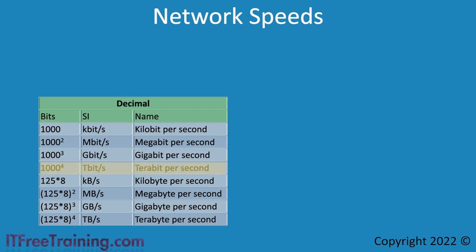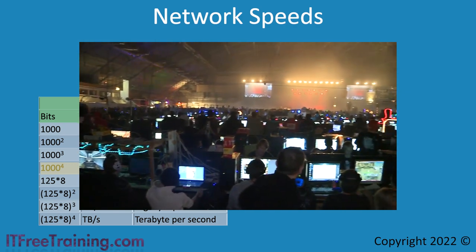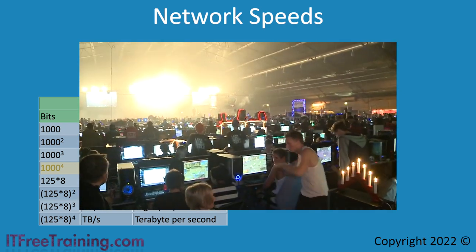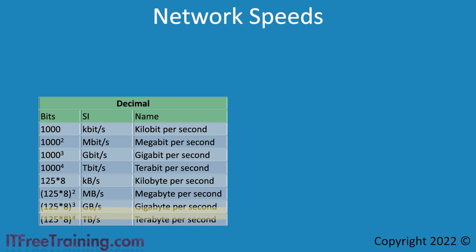The next speed is terabit per second. There are commercial terabit lines available, but you won't see them in the home market yet. Generally these lines would be used for the backbones of the internet or special events like DreamHack, which had a 1.6 terabit connection connecting the event participants to the internet. Speed can also be measured in bytes per second rather than bits per second — you simply divide bits per second by 8, giving kilobytes per second, megabytes per second, gigabytes per second, and terabytes per second.